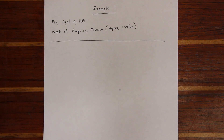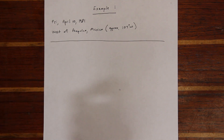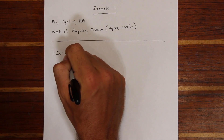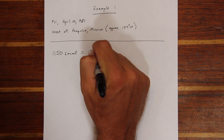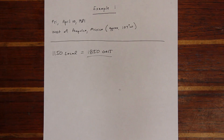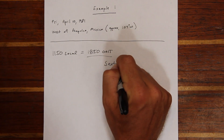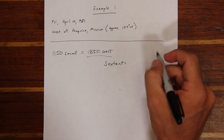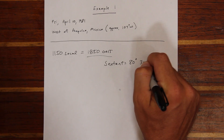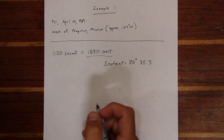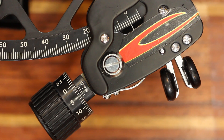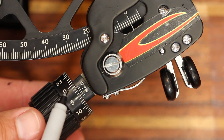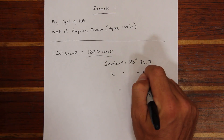If you apply these every time you'll be as accurate as you can be. Let's take a look at an example problem. In this case we're west of Mexico, approximately 107 degrees in longitude. If we take a measurement at 1150 local time, because of that longitude it translates into about 1850 GMT. If our sextant measurement is 80 degrees 35.3, we have to start by making our three sextant corrections. The first is index correction — we measure the horizon and determine that we have a 2-minute index error, so we subtract it and come up with a new figure.